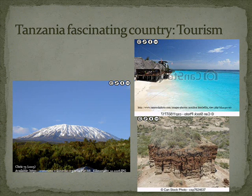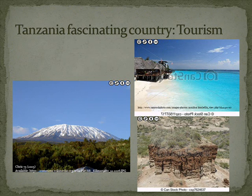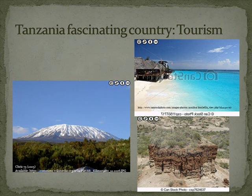Mount Kilimanjaro is an amazing range. It is the only isolated mountain in the entire world that has six world climate zones. These climate zones range from tropics to the arctic zones, as the top of the mountain is a glacial region comprising snow throughout the entire year.